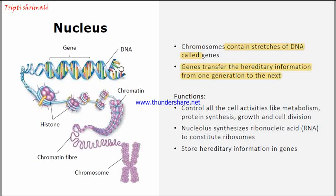DNA is a polynucleotide with a double helical structure, and histone proteins are present alongside it. The purple-colored structures in the diagram are the histone octamers. So chromatin fiber contains DNA and histone protein, and it takes the form of chromosomes at the time of cell division.